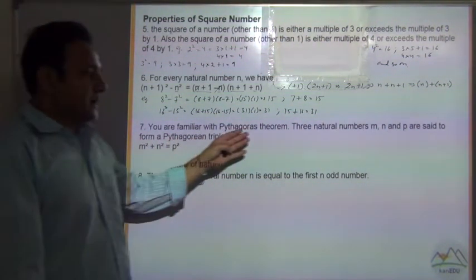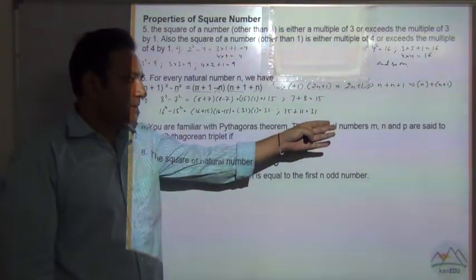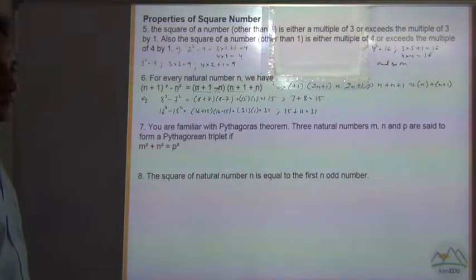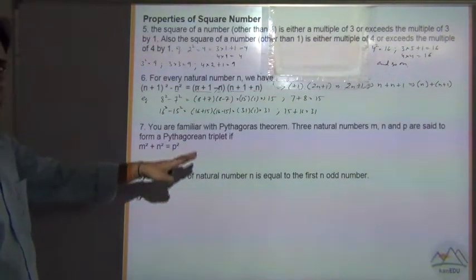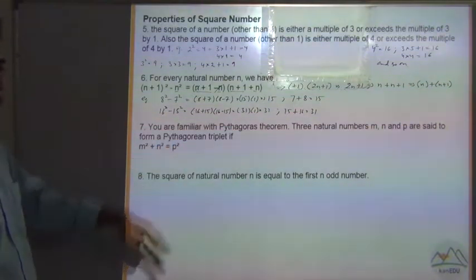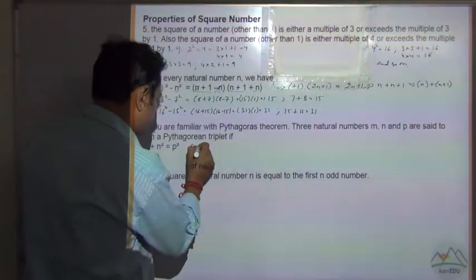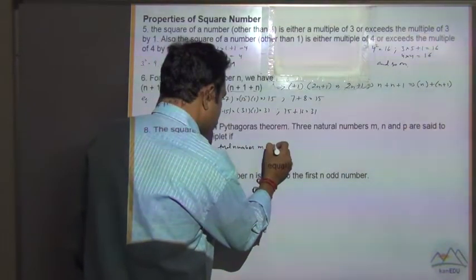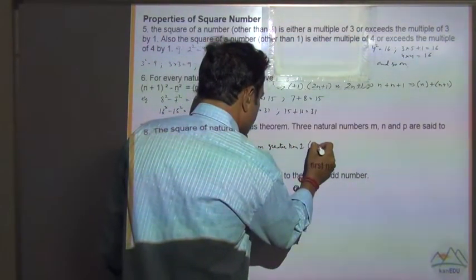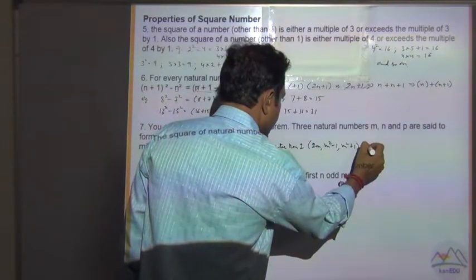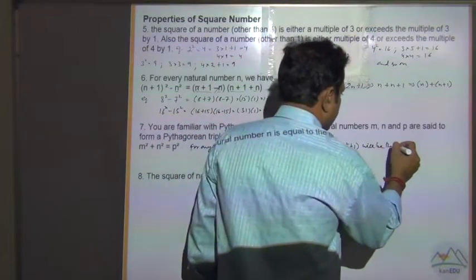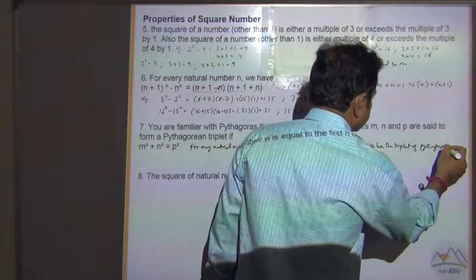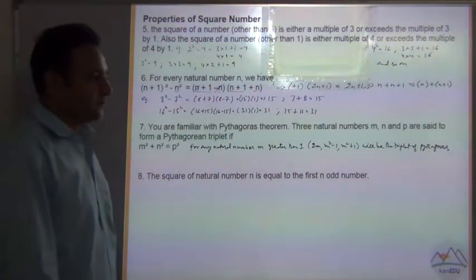The next property — you are familiar with the Pythagorean theorem. Three natural numbers m, n, and p are said to form a Pythagorean triplet if m² + n² = p². For any natural number m greater than 1, the three numbers 2m, m² - 1, and m² + 1 form a Pythagorean triplet.